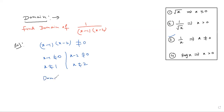Now what is the domain? Domain should always be mentioned with respect to capital R, which means real numbers. You should mention domain with respect to the real number set R. The meaning of this answer is: domain can be any value except 1 and 2. So the domain is R minus {1, 2}.